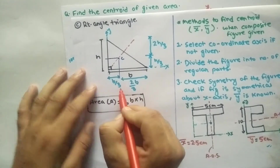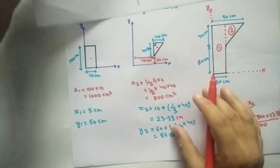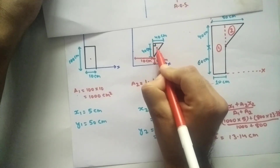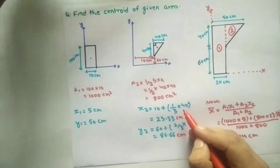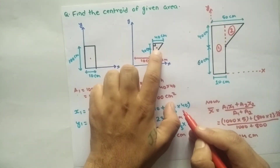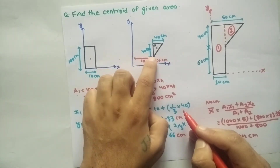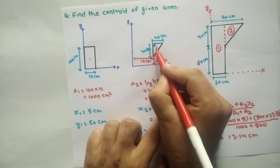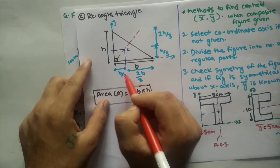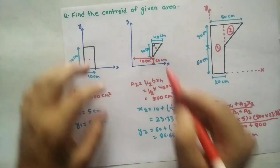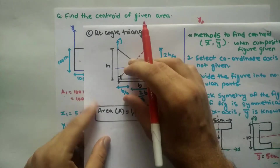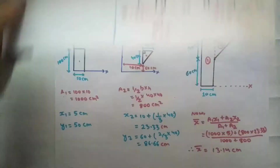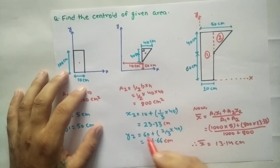For a right-angle triangle, the centroid is located at 1/3 of the distance from the right-angle side. It is very important to know that for this triangle, the centroid x2 is located at 1/3 of the base distance of 40 cm. So x2 = 10 + 1/3 × 40 = 23.33 cm.